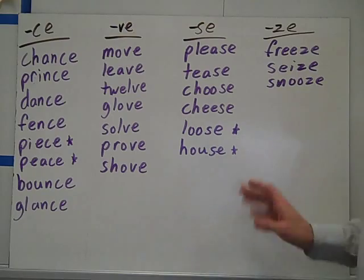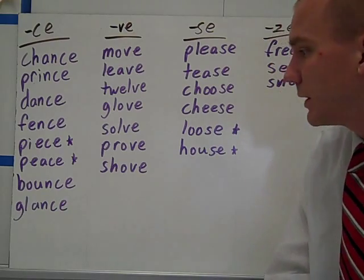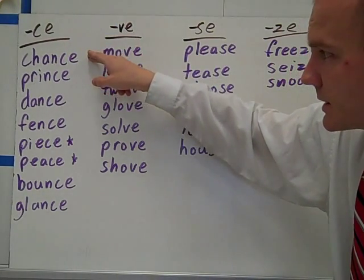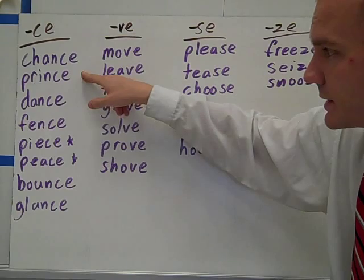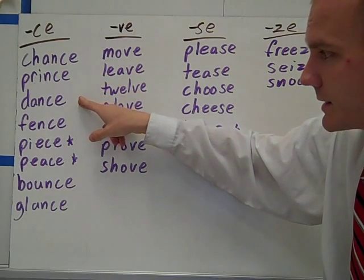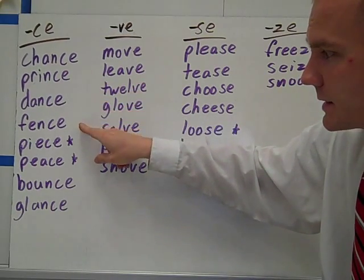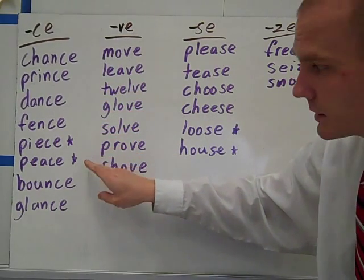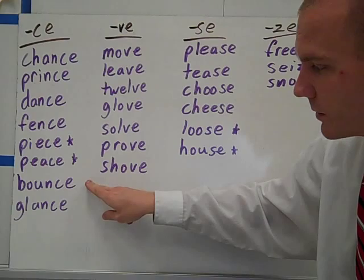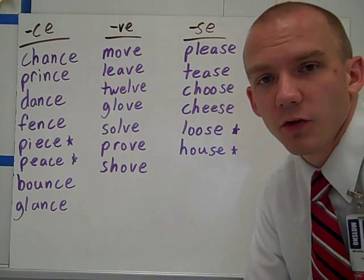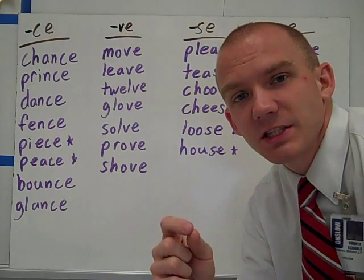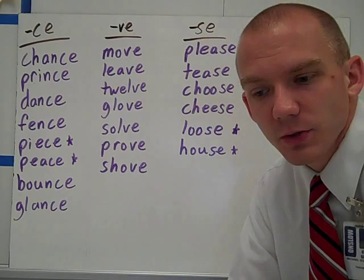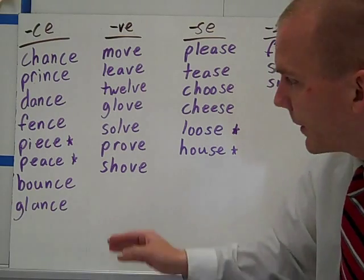So these are all our columns and all our words. Start with C-E. You have chance, prince, dance, fence, peace, bounce, and glance. All of them end with an S sound.